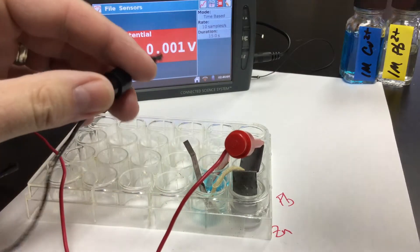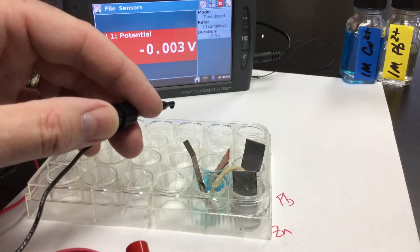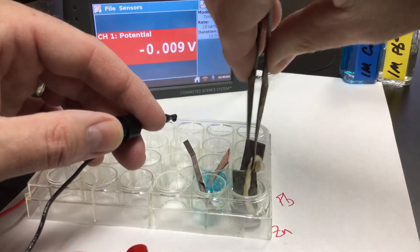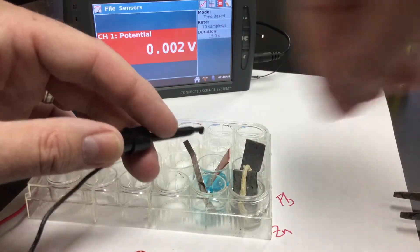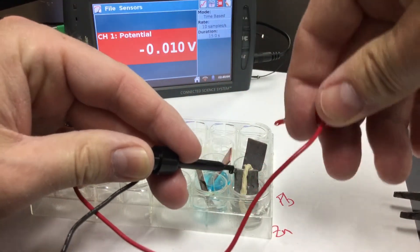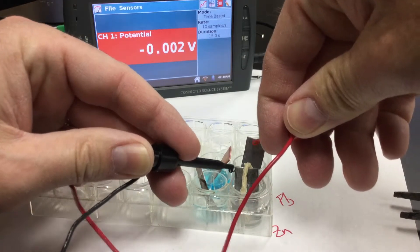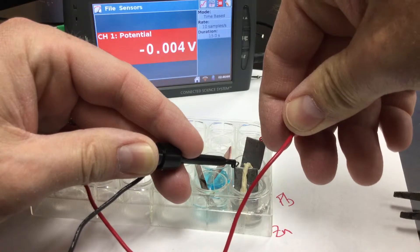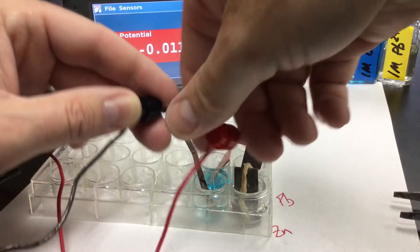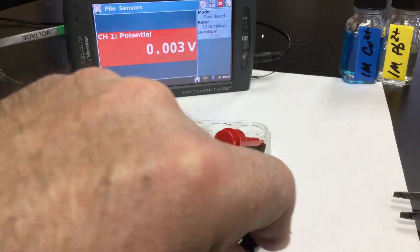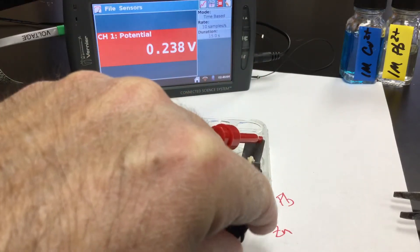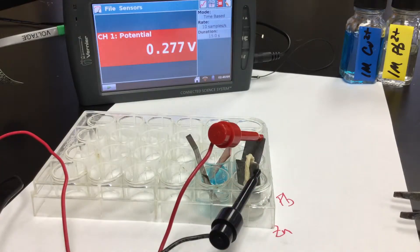Now we can do zinc compared to lead. Alright, so let's go ahead and do that. Zinc, transfer my salt bridge. Okay. Let's see if I'm going to get a positive value this way. Easier said than done to hook these up sometimes. Okay, so I've got my red electrode connection to the lead and the black on the zinc. We're getting a potential difference around 0.25 it looks like.